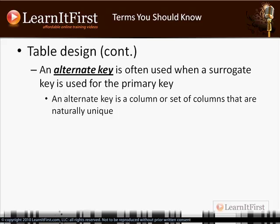With an alternate key, I don't want to get into the idea of index size and table size here. When you have a naturally occurring unique set, many times that spans many columns. For example, a social security number — in the US, that's a government-generated number and it's theoretically going to be unique.